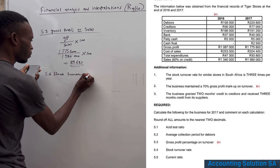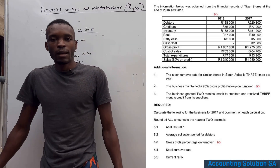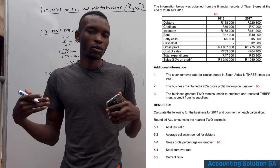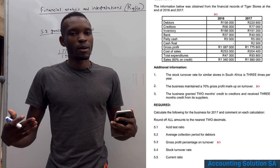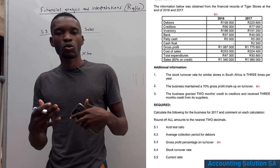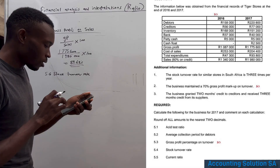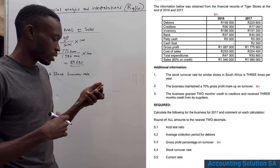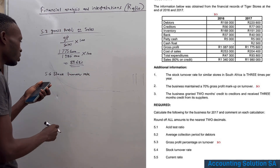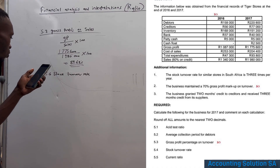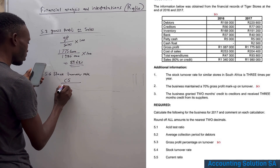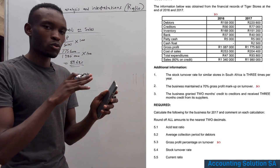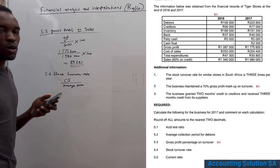Question 5.4 is stock turnover — how many times we turn our inventory. For example, if we order stock today and sell it within a month, we may stock twice a month. The formula is cost of sales divided by average stock. No multiplication by 100 here — we are looking for times, not a percentage.